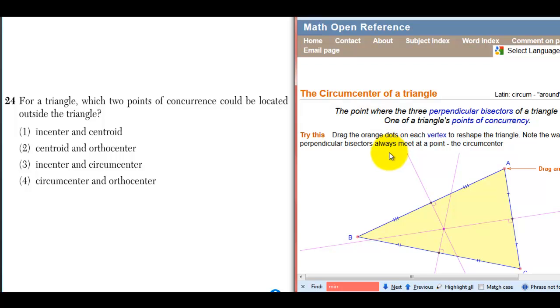For a triangle, which two points of concurrence could be located outside the triangle? Incenter, centroid, orthocenter, circumcenter.